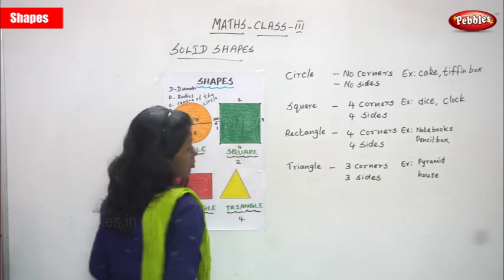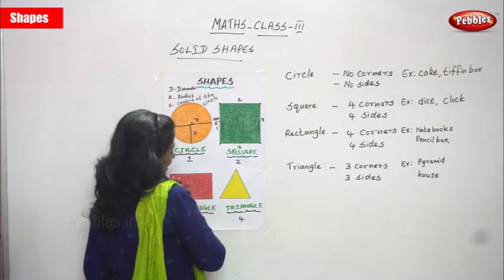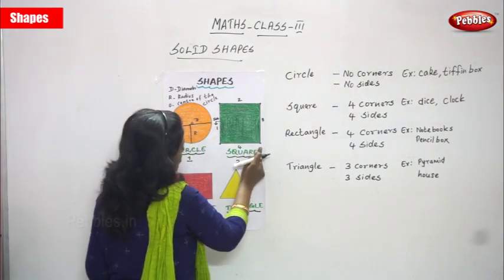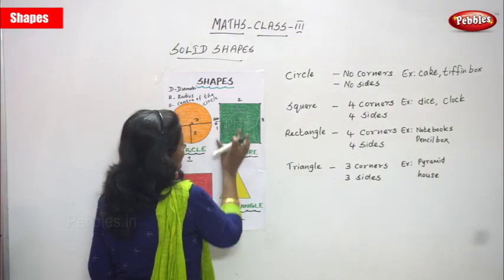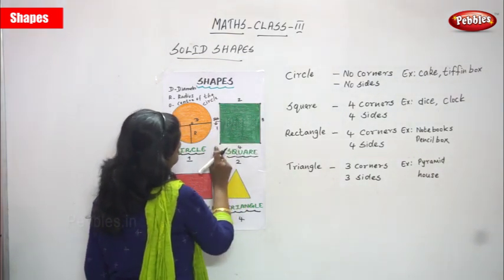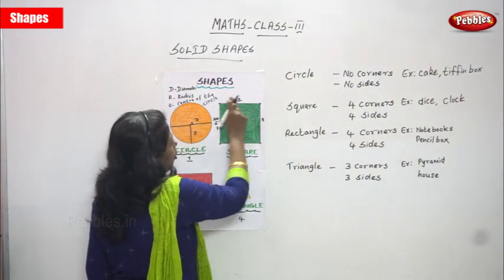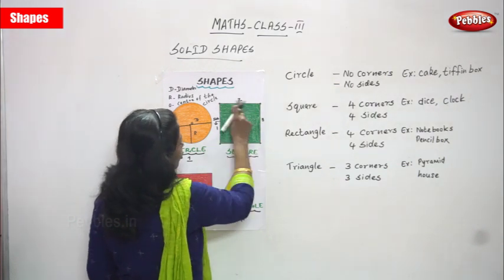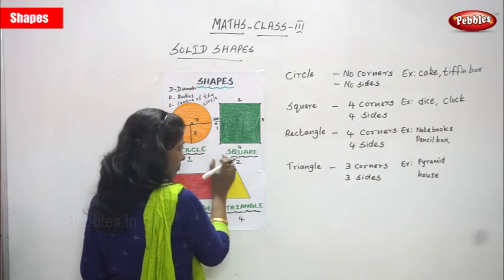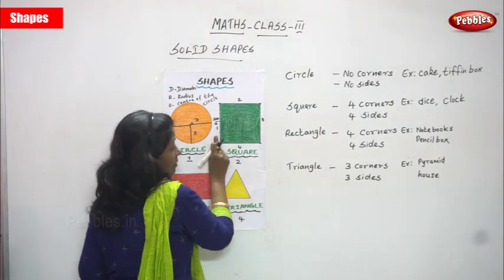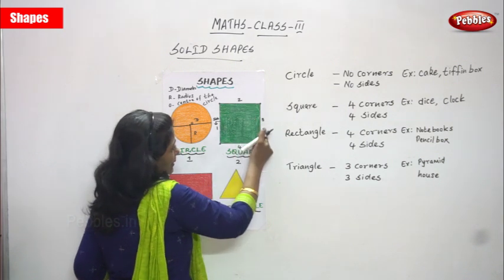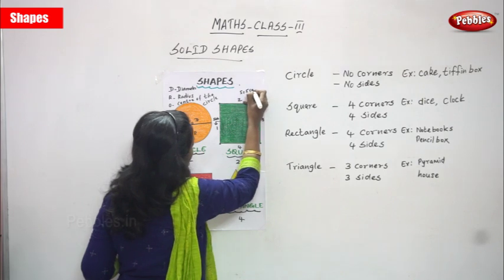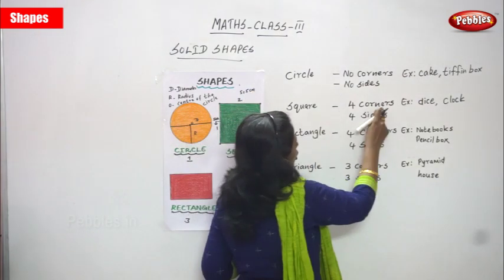Generally we use the terms length and breadth only for rectangle. For a square, we don't use length and breadth — we use the term 'length of the side,' because all four sides are equal. So the length of the side equals 5 centimeters, meaning all four sides are equal.